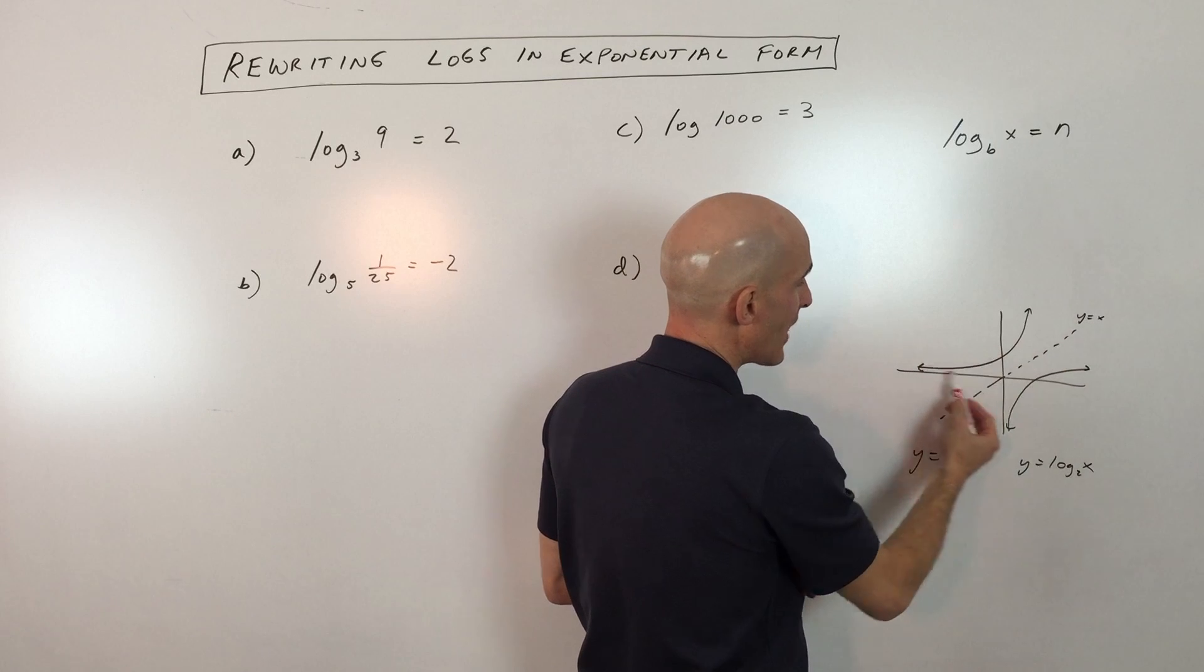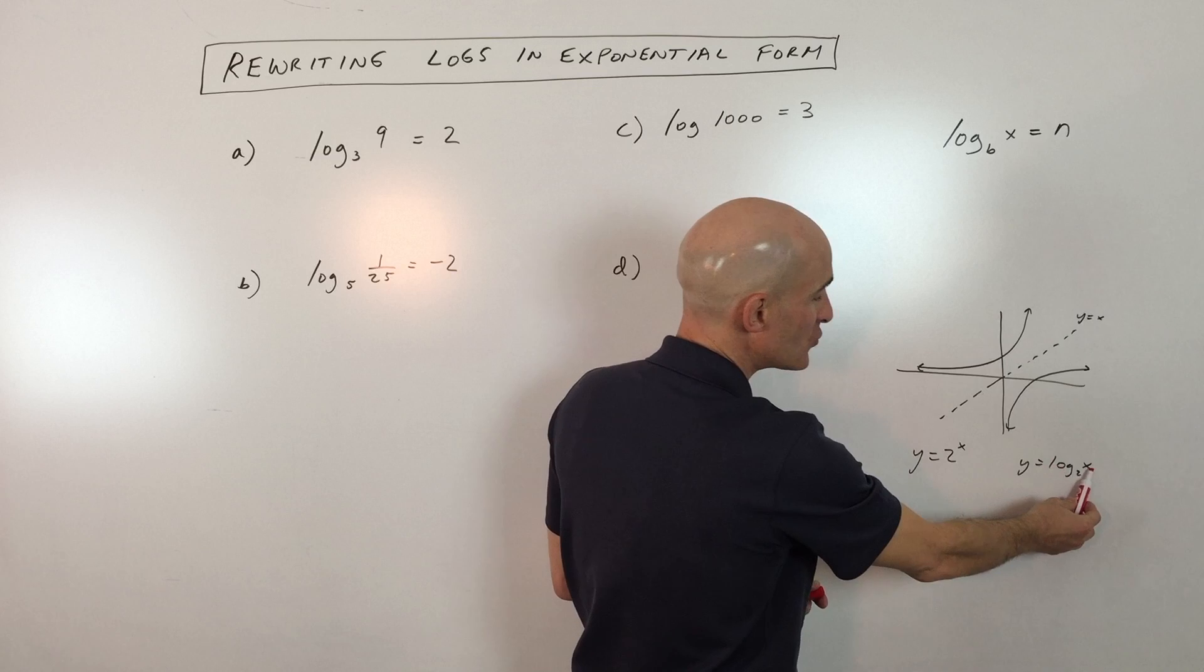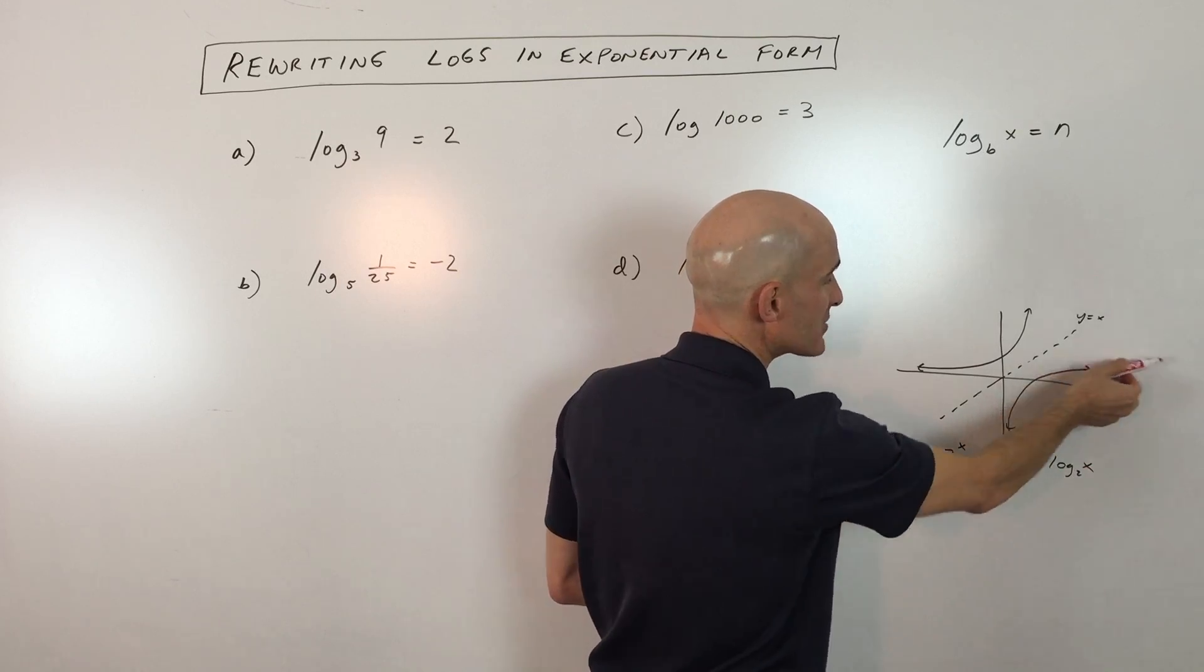y equals 2 to the x, this is an exponential graph. See how it grows faster and faster. And we have y equals log base 2 of x. You can see this graph is growing slower and slower.